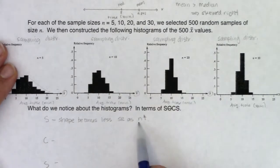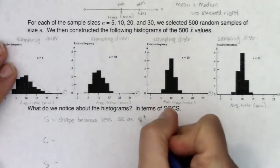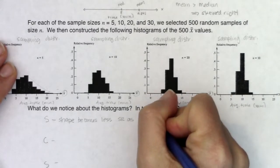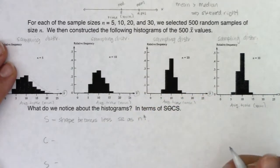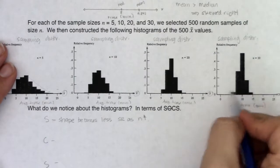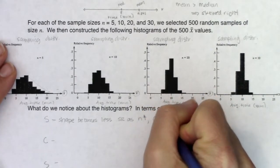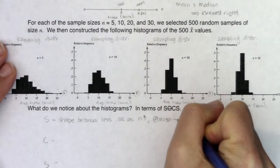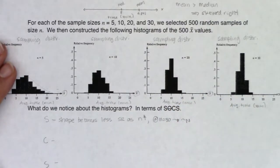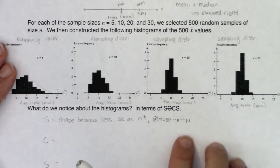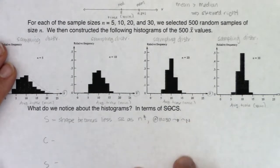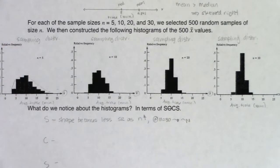So the shape became less skewed right as sample size increased — as n gets larger. When we got to n equals 30, the graph really is starting to look approximately normal. I'll address on the next page when we can officially say it's approximately normal or not.